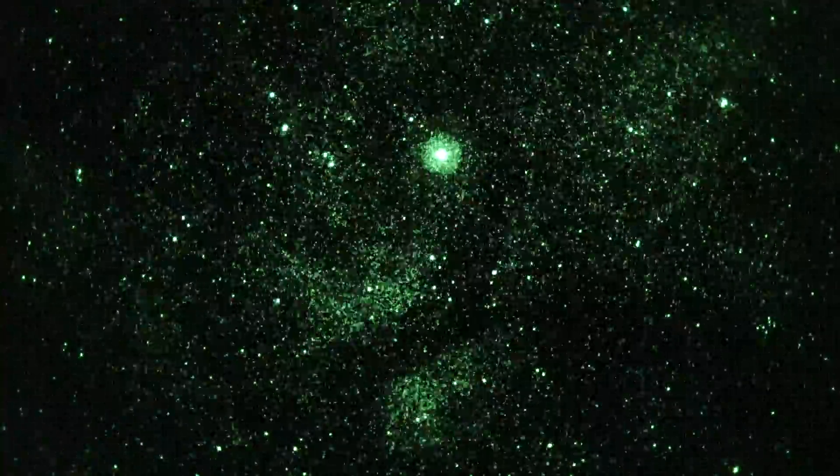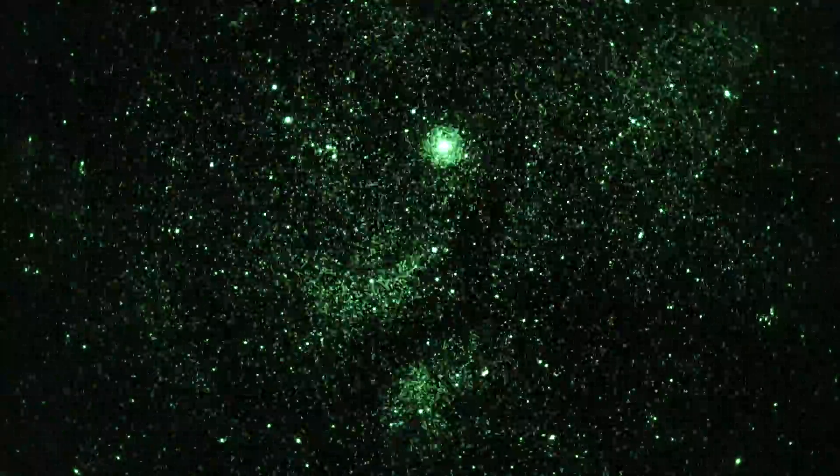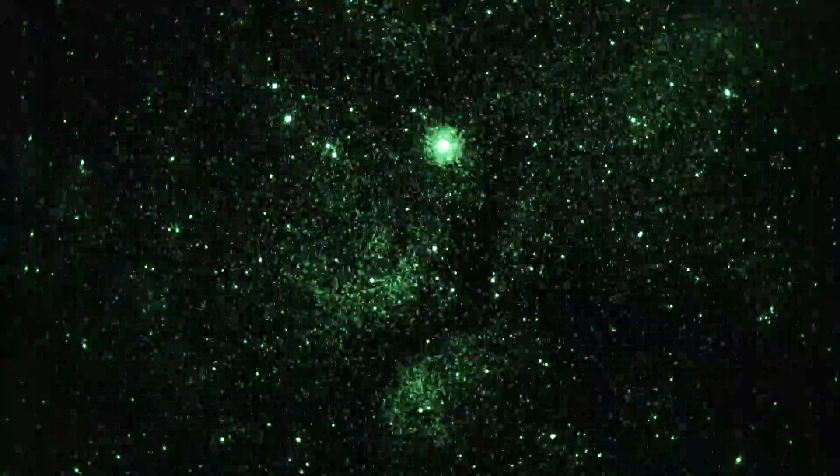So anyway, Gamma Cygni nebula cloud. What else can I say? Camera settings on the Sony a7s camera that we're using: 1/30th of a second shutter, ISO 32,000. And that we'll call a wrap. Hope you like that.